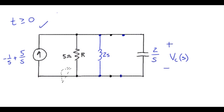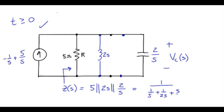So the impedance looking in would be 5 in parallel with 2S in parallel with 2 over S, and that would look like 1 over 1 fifth plus 1 over 2S plus S over 2.